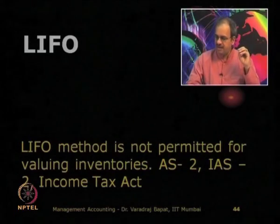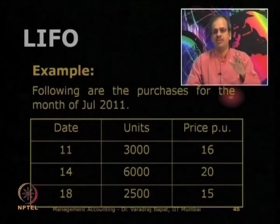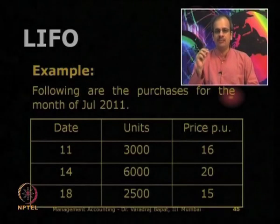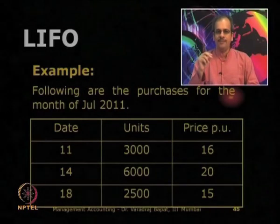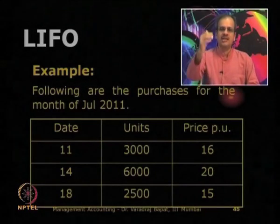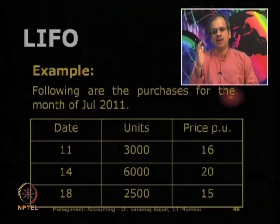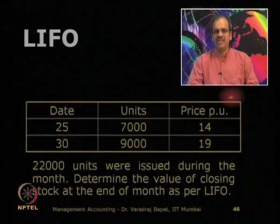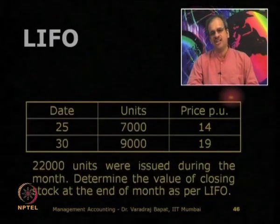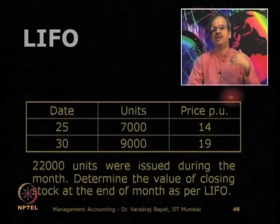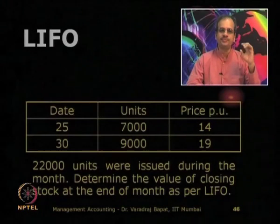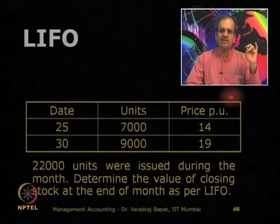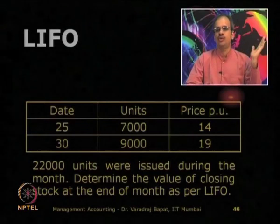Let us have an example — it will be more clear to you. In this example, in the month of July, certain purchases are given. You can see purchases on the 11th, 14th, 18th, 25th, and 30th, where different units are purchased, and out of that 22,000 units are issued. We have to determine the value of closing stock at the end of the month.